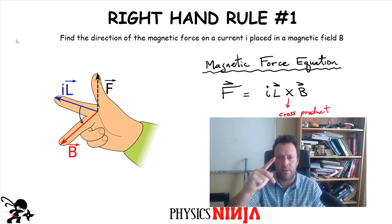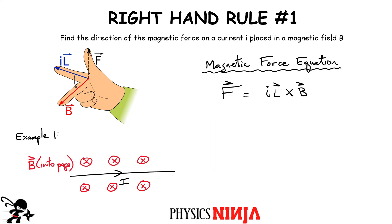Let's practice with this simple example. I have a current — a positive current moving to the right — and it's placed in a magnetic field that is into the page. Right-hand rule number one says you take your index finger, place it in the direction of the current. Your middle finger should point in the direction of the magnetic field, which is into the page. Your thumb is then pointing up, meaning this current would experience a magnetic force F acting upward.